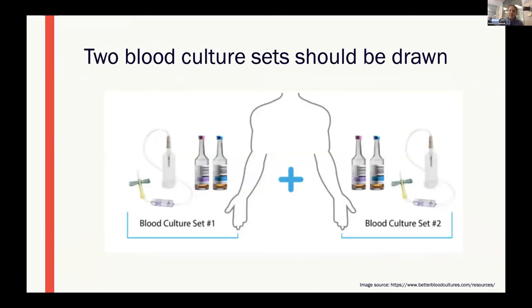One set of blood cultures consists of two bottles — one aerobic and one anaerobic. The best practice is to draw two sets of blood cultures within 24 hours of one another. First, we want to increase sensitivity for detecting a true pathogen by submitting a large volume of blood for testing. But second, having two sets helps us rule out potential contamination. If a skin commensal grows in only one of the two sets, it's more likely to be a contaminant, whereas if it grows in both, we might consider it a real infection.